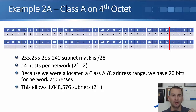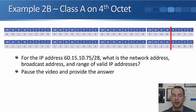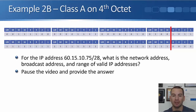If you had to calculate 2 to the power of 20 on the exam, you could still do it — you just start at 2 and keep doubling up all the way until you've done it 20 times. For part 2 of the question: for the IP address 60.15.10.75/28, what is the network address, the broadcast address, and the range of valid IP addresses? Pause the video and figure it out.